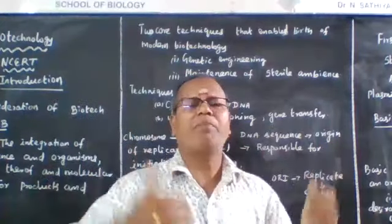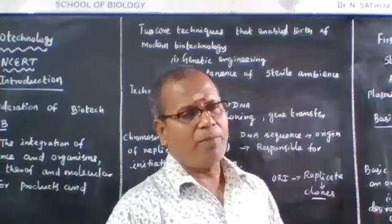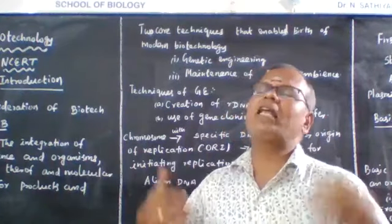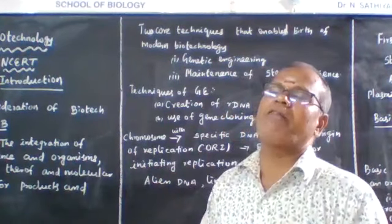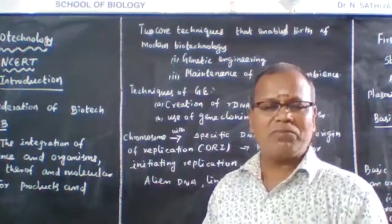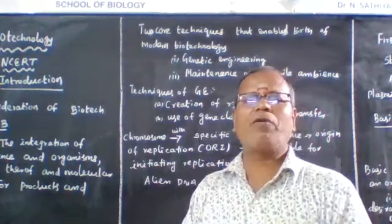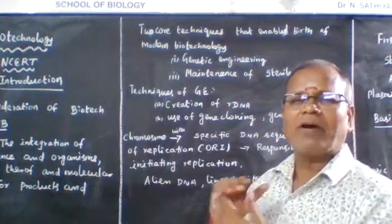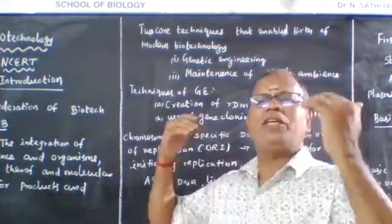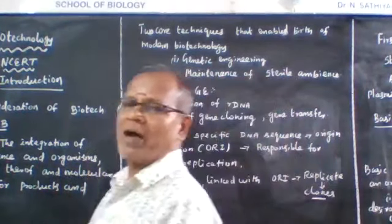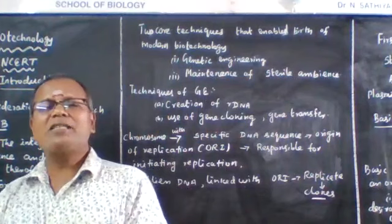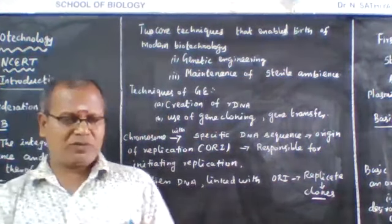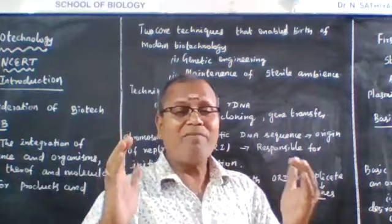Plants that are GMOs are called transgenic plants; animals are called transgenic animals — generally referred to as genetically modified organisms. The second core technique is maintenance of sterile conditions.